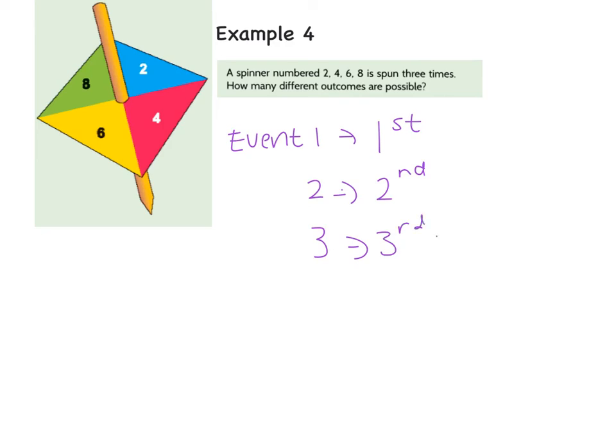When we talk about event 1, we want to know how many outcomes are possible. And when you spin this, there are 4 outcomes. When you spin it again, there are 4 outcomes the next time. You can still get 2, 4, 6, or 8. And when you spin it the third time, there are still 4 outcomes.